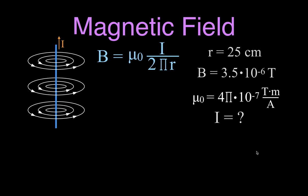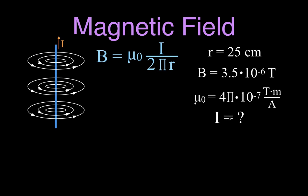In the second example, we're going to figure out the current. We know the magnetic field from the current carrying wire is 3.5×10⁻⁶ teslas, and we're 25 centimeters away from the wire. R is the distance from the wire — the radius of that circular magnetic field. We want to know what current would be needed to generate this magnetic field at this distance.